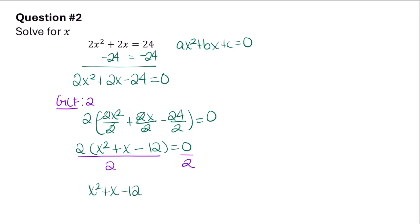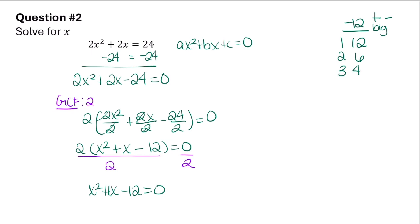I'm going to solve this one by factoring. To factor I need to find two factors of negative 12 that add up to b, which is 1. Since 12 is negative I need a positive and a negative factor. I'll make the bigger factor positive. The factors of 12 are 1 and 12, 2 and 6, and 3 and 4. The correct combination is negative 3 and 4. So I can factor this as x minus 3 times x plus 4 equals 0.